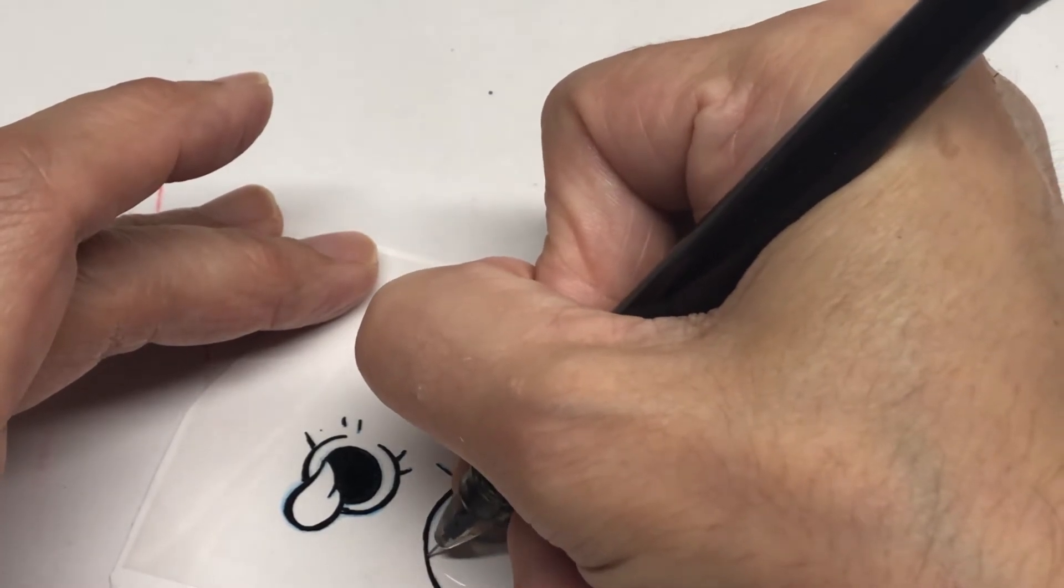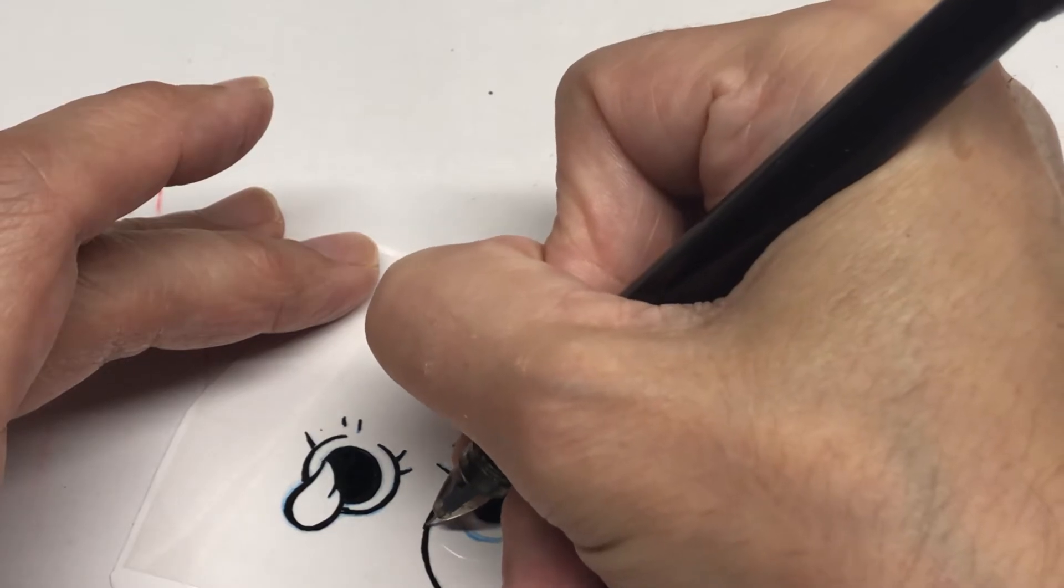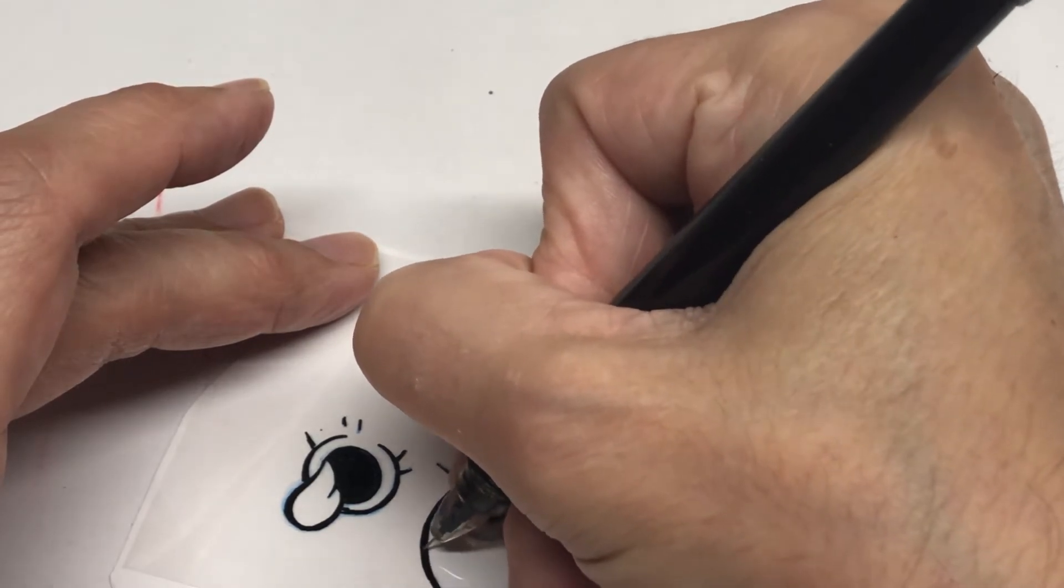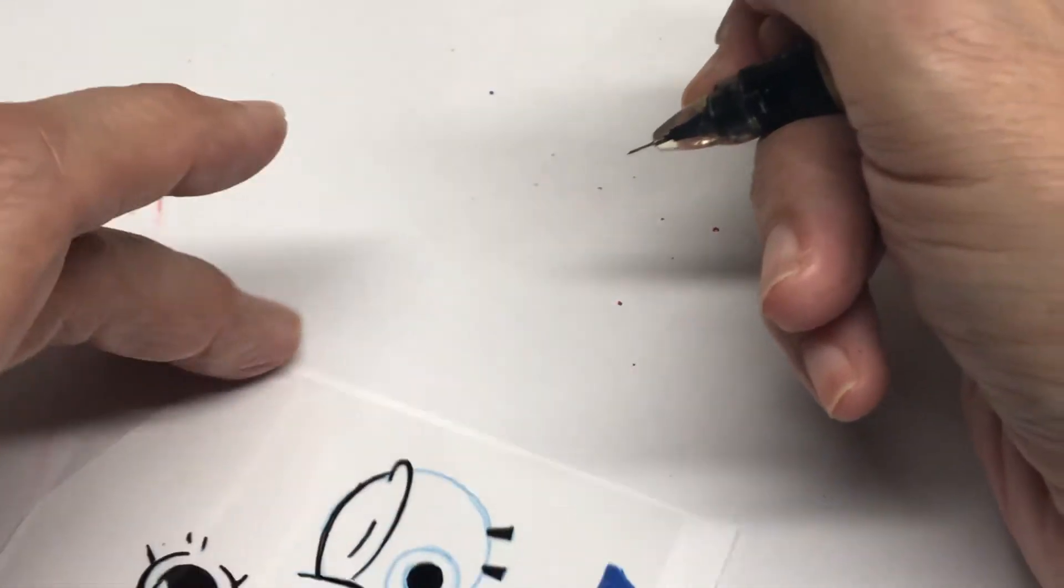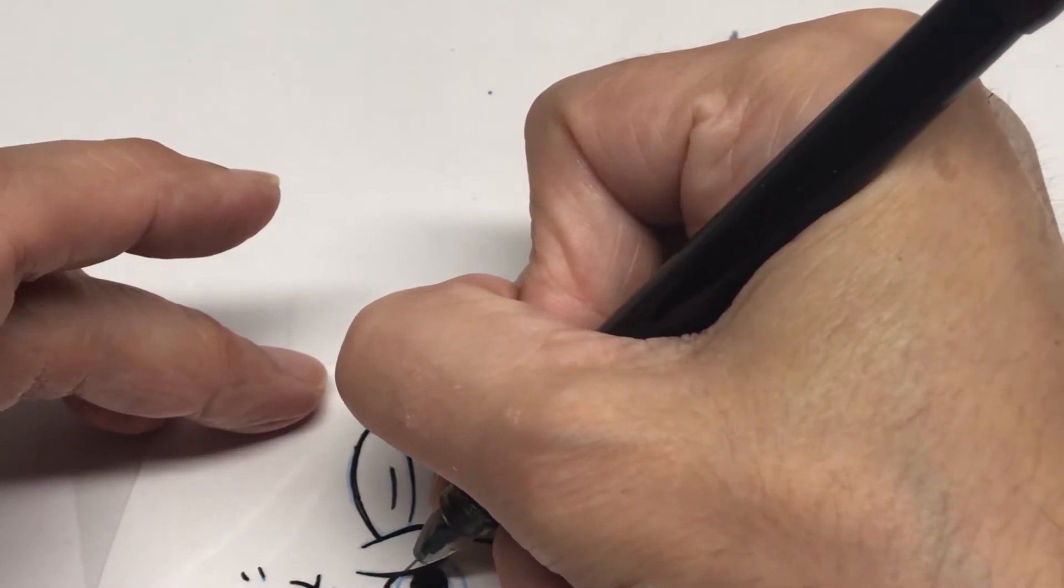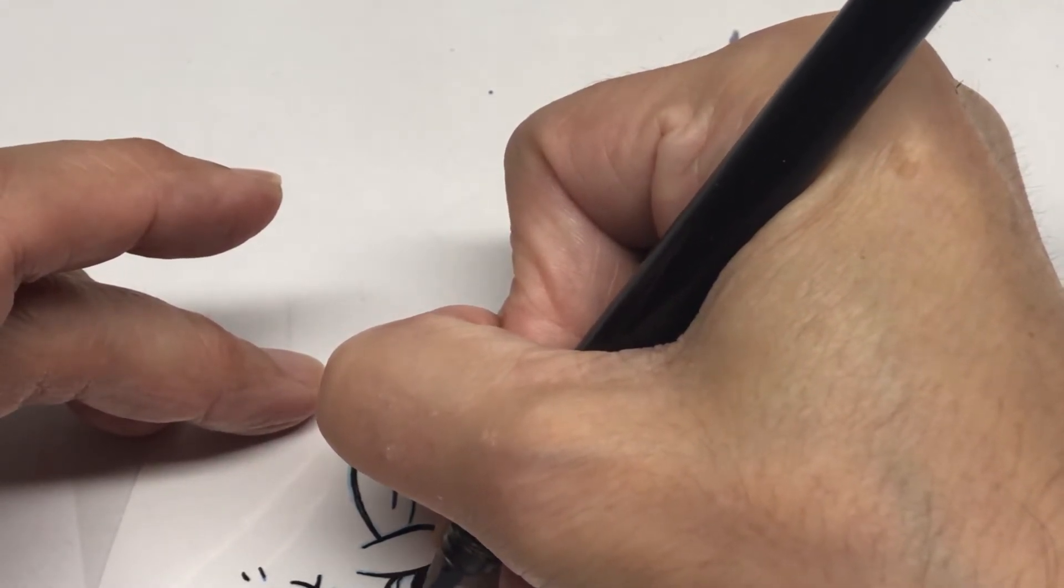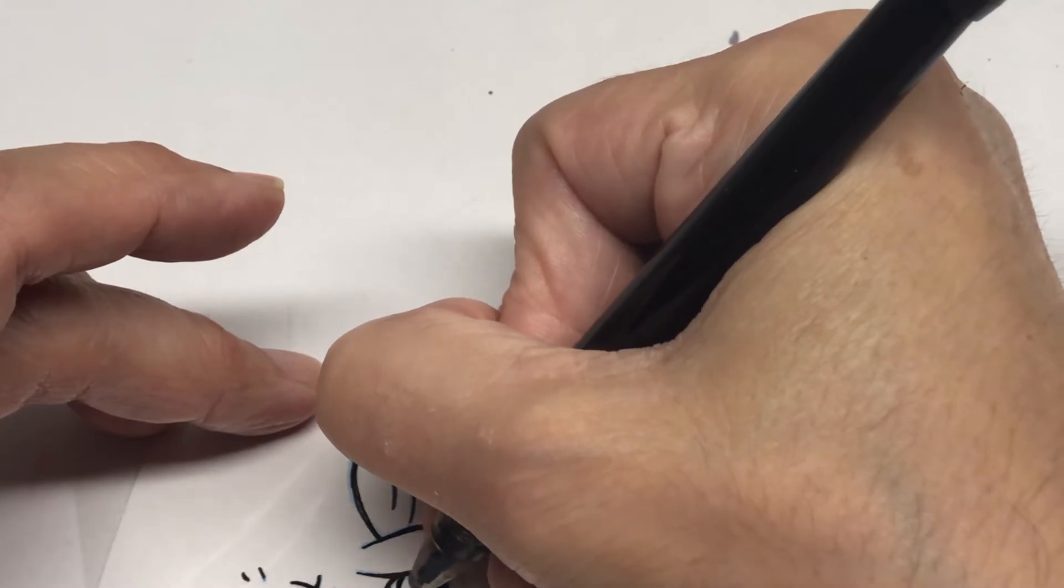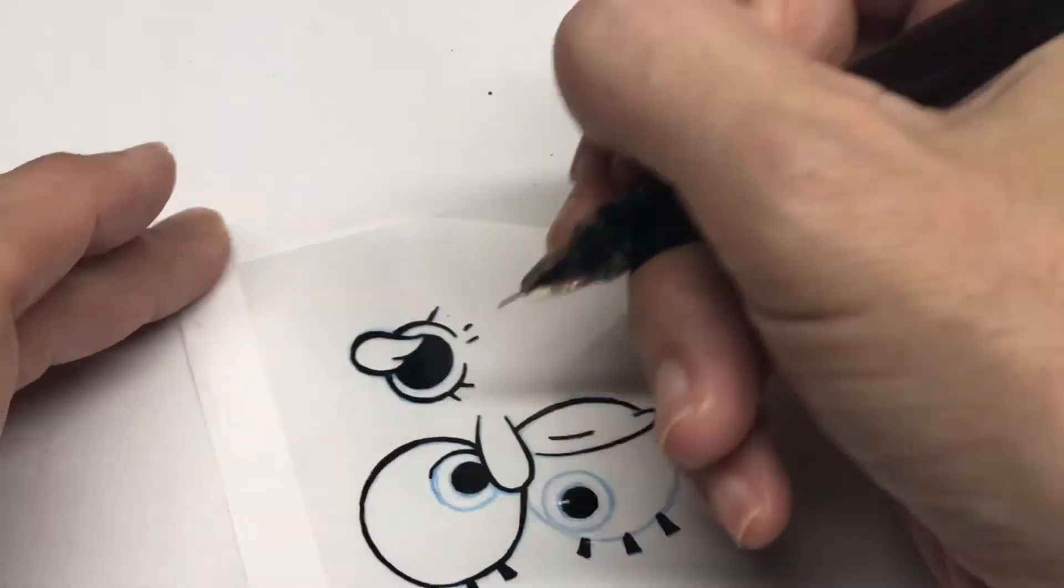But, this ink doesn't chip or peel at all. And, it dries really quick. Some of the other color pens don't work that way. But, I just use this particular ink is for drafting.